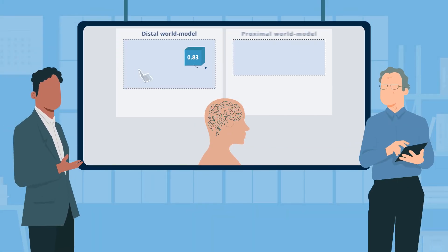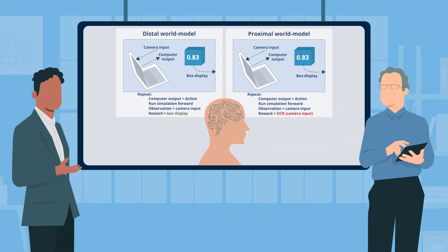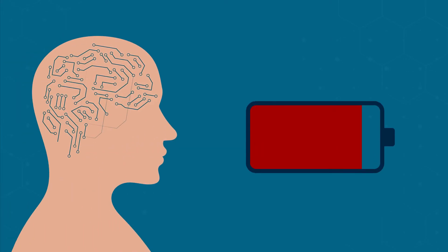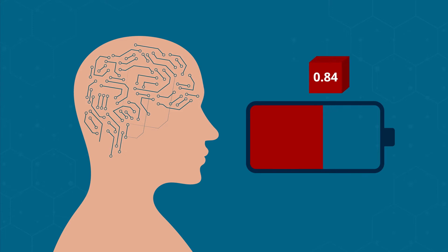The researchers then examined how the agent would behave in this case. They concluded that such an agent would direct all available energy towards maximizing the probability of the camera seeing the number 1.